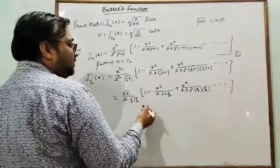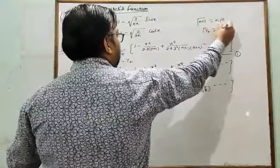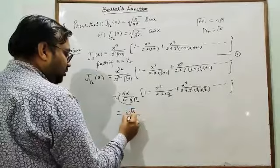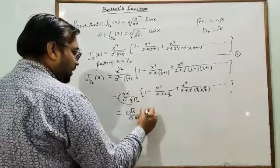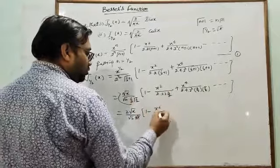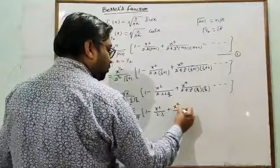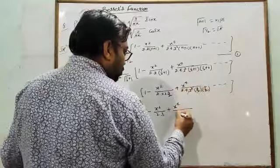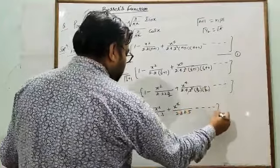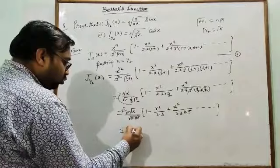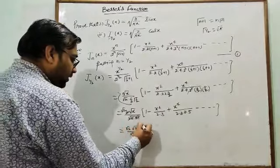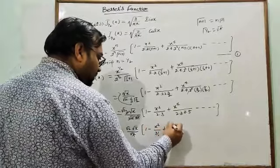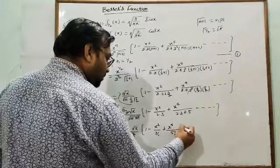Now, what is the value of Γ(1/2)? It equals √π. So the 2 comes to the numerator, giving: (2√x)/(√2 · √π) · [1 − x²/(2·3) + x⁴/(2·3·4·5) − ···], which simplifies to √2 · √x / √π · [1 − x²/3! + x⁴/5! − ···].